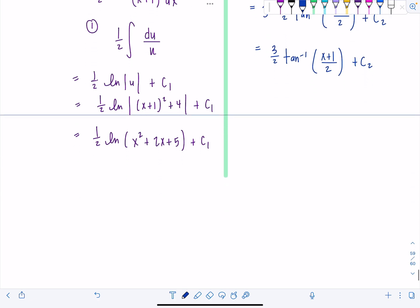So all together now, we can put it as 1 sum. So we have 1 half ln x squared plus 2x plus 5 plus 3 halves tan inverse x plus 1 over 2 plus c. Where? Tell the people, c is c1 plus c2.